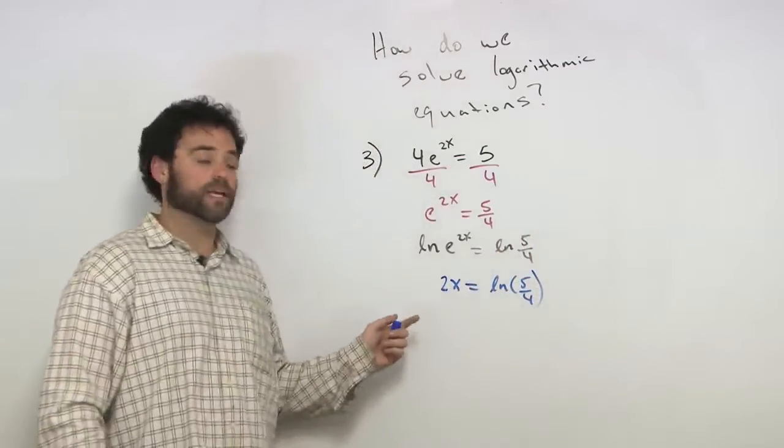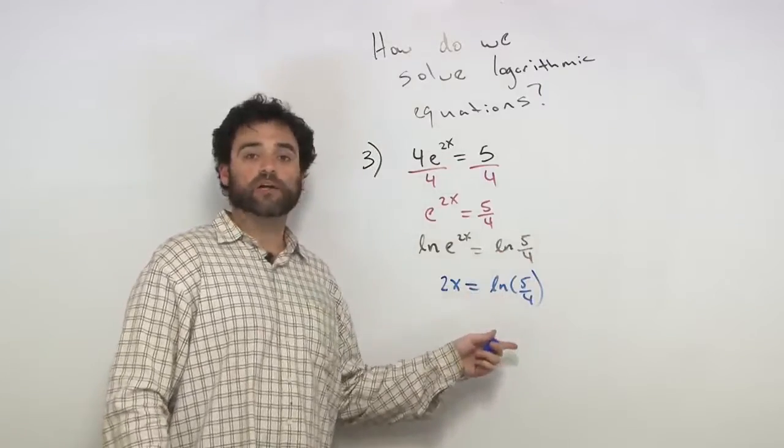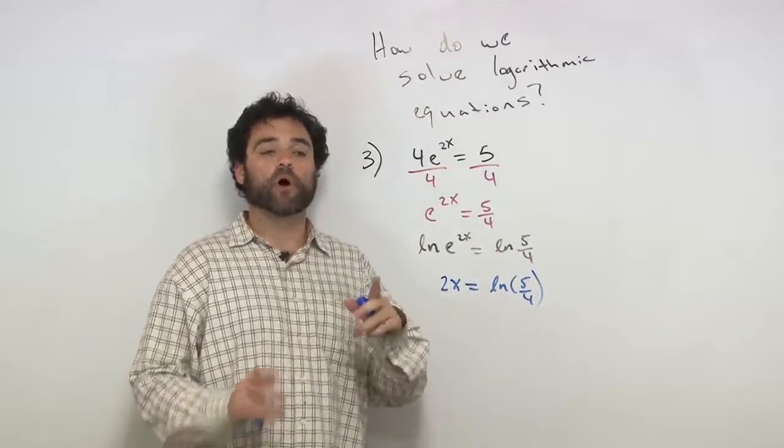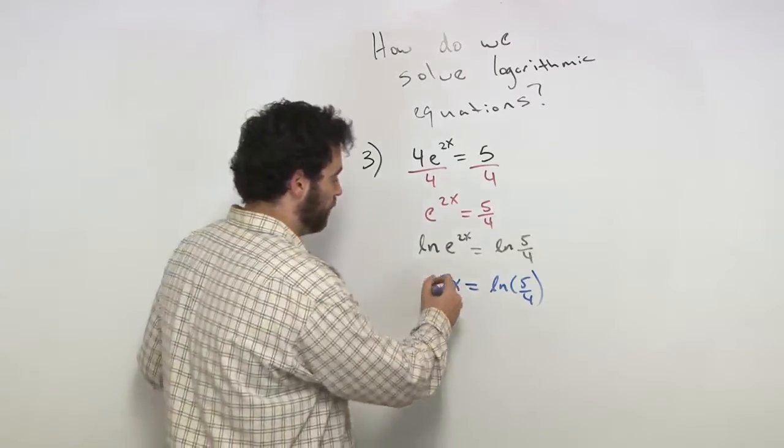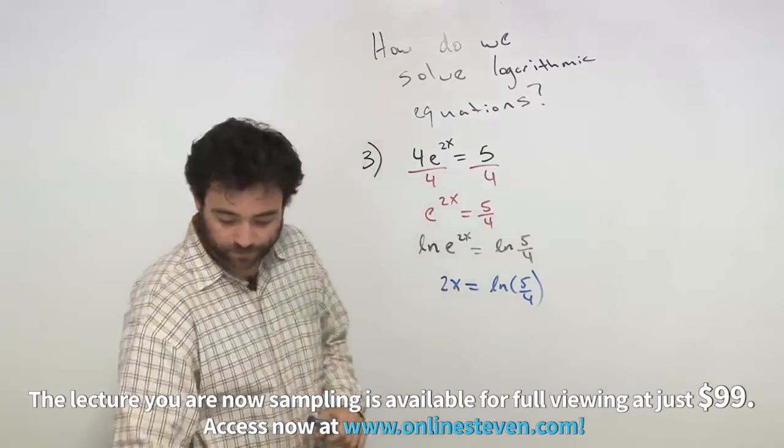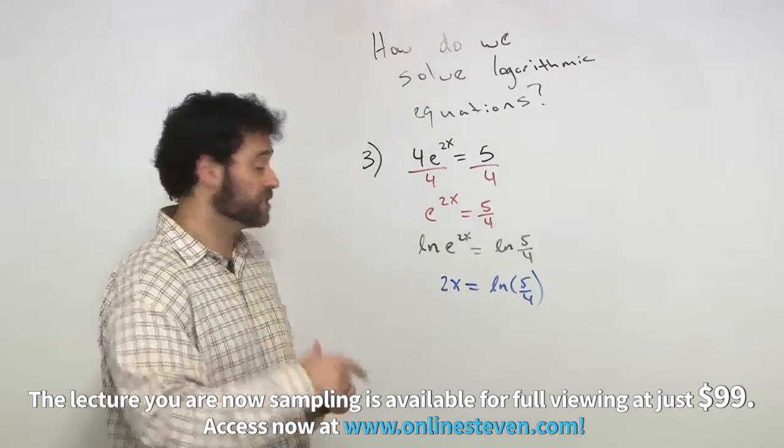I know you're awfully tempted right now to type that into your calculator to get an approximation. But always hold that off to the end, especially when it's approximations. You hold that off to the end. Get the x by itself. Why do I do that? I'm going to multiply both sides.